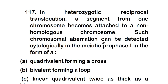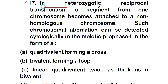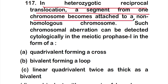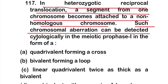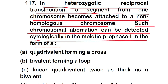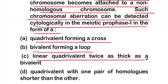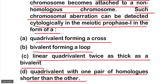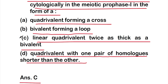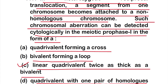Question 117: in heterozygotic reciprocal translocation, a segment from one chromosome becomes attached to a non-homologous chromosome. This chromosomal aberration can be detected cytologically in meiotic prophase I in the form of: Option A quadrivalent forming a cross, Option B bivalent forming a loop, Option C linear quadrivalent twice as thick as a bivalent, Option D quadrivalent with one pair of homologs shorter than the others. The right answer is Option C — linear quadrivalent twice as thick as a bivalent.